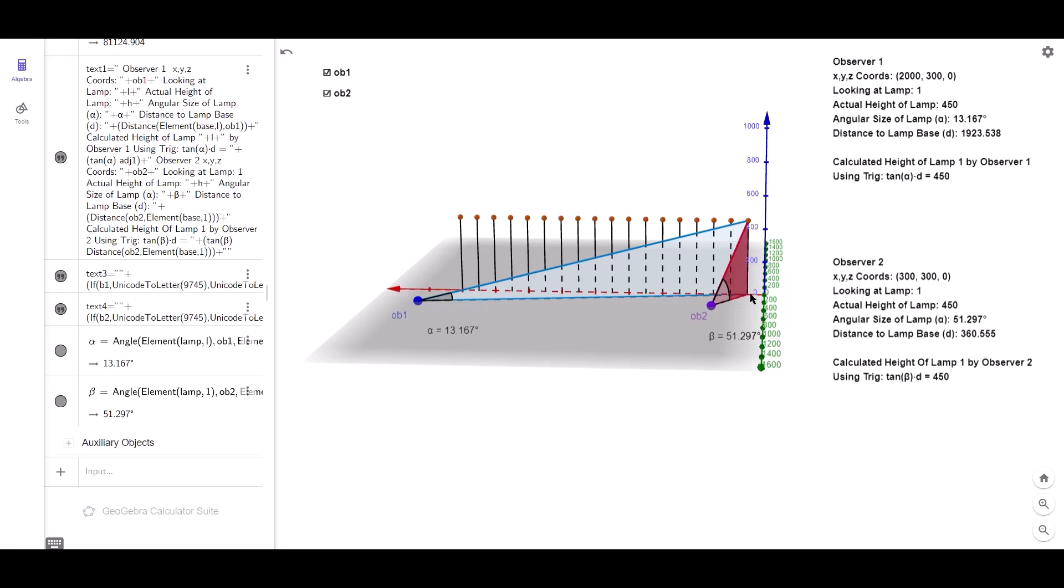So we could also say for each observer that the lamp pole is the opposite side of their triangles, and the distance along the ground is their adjacent. Now we know that the heights of each lamp pole is 450, but Mike and Michelle don't know that. They just know what height they are in terms of their angular measurements or angular size.